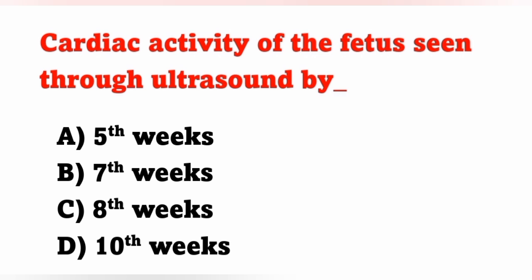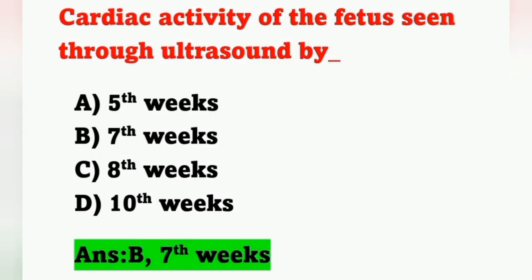The next question: cardiac activity of the fetus is first seen through ultrasound at — options: A: fifth week, B: seventh week, C: eighth week, D: tenth week. The cardiac activity of the fetus can first be seen through ultrasonography at about the seventh week of gestation — option B is the correct answer.